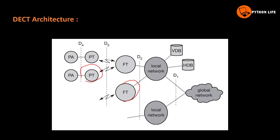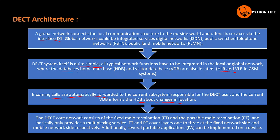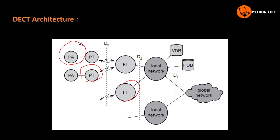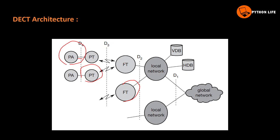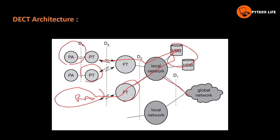Fixed Radio Transmission in the local area network provides signal towers. The mobile phone uses portable transmission via phone applications. Portable communications include phone calls, WhatsApp, or other device applications. The portable terminator is a radio terminator handling signals. Data is called between FT and PT.